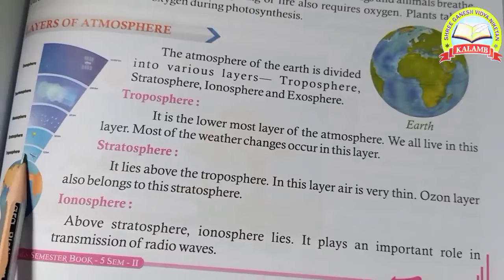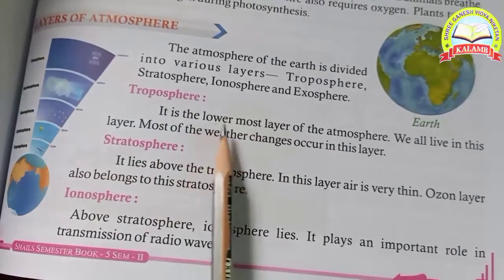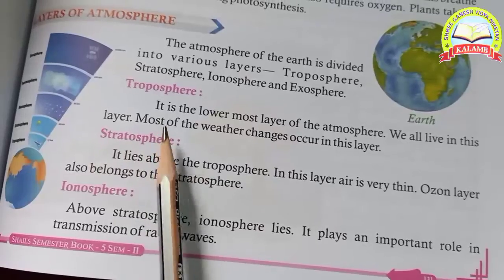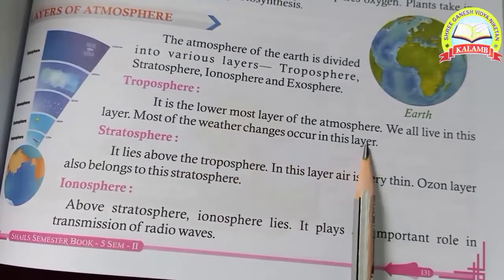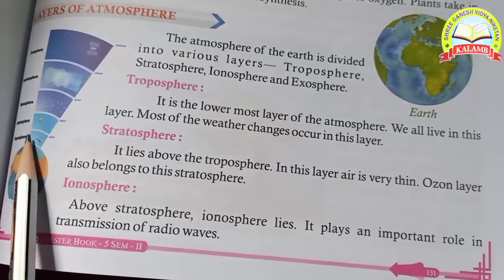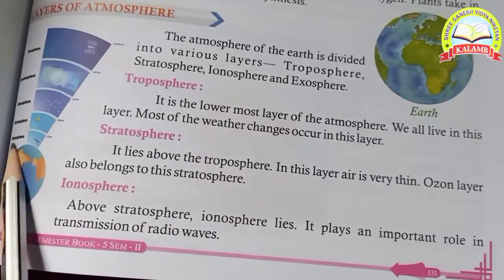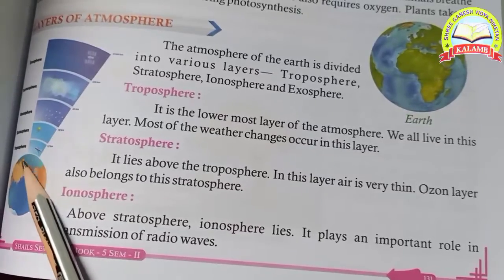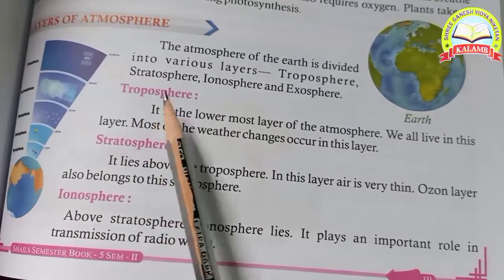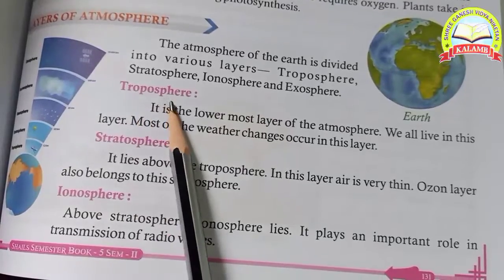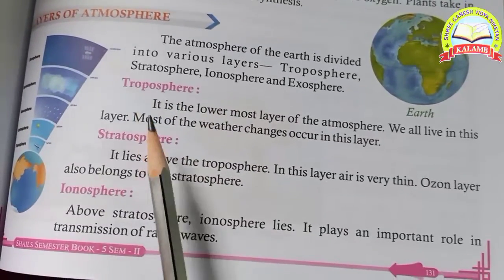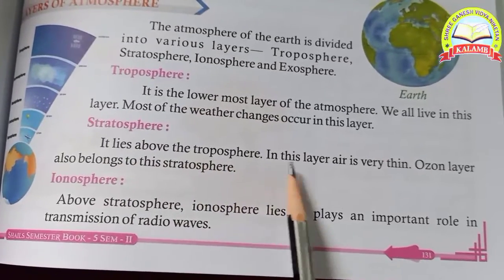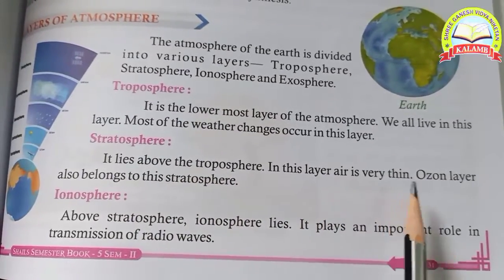Troposphere is the lowest layer of the atmosphere. We all live in this layer. Most of the weather changes occur in this layer. Above the troposphere, the air is very thin.